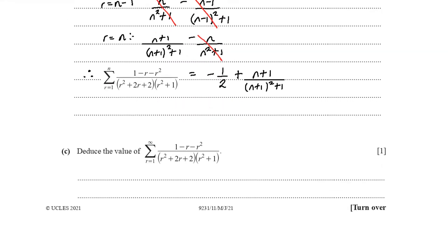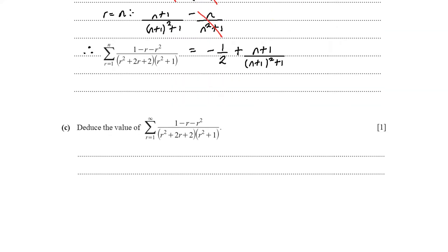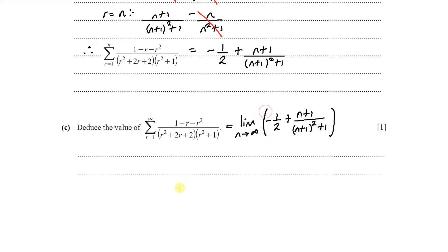Part C: deduce the value of the summation from r equals 1 to infinity of (1 minus r minus r squared) over (r squared plus 2r plus 2)(r squared plus 1). This infinite sum is the same as the limit as n approaches infinity of minus one-half plus (n+1) over (n+1)² plus 1.